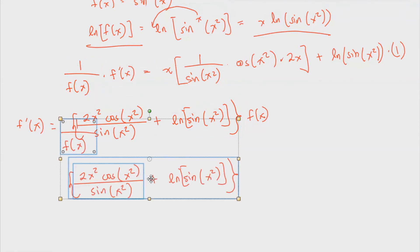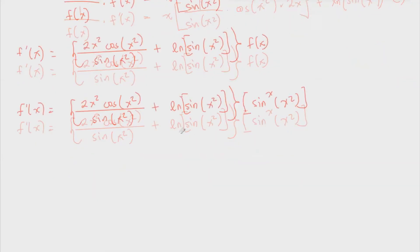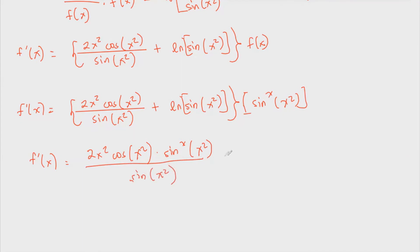We need to express this in terms of f prime of x. So f prime of x equals 2x squared cosine of x squared over sine of x squared, plus ln of sine of x squared, and then we multiply all of this by f of x. Since f of x is sine of x squared raised to x, the final answer is f prime of x equals 2x squared cosine of x squared times sine of x squared raised to x over sine of x squared, plus sine of x squared raised to x times ln of sine of x squared.